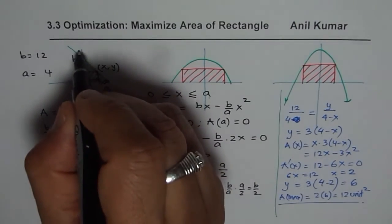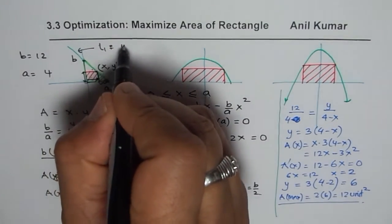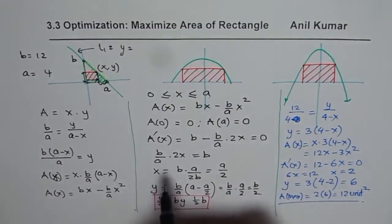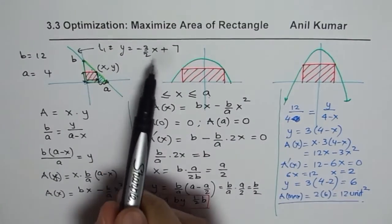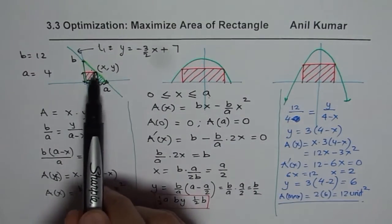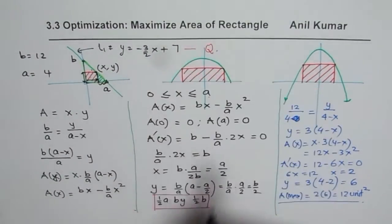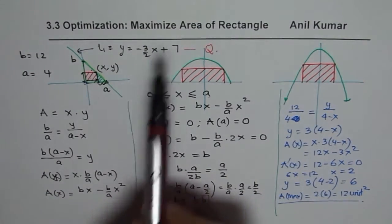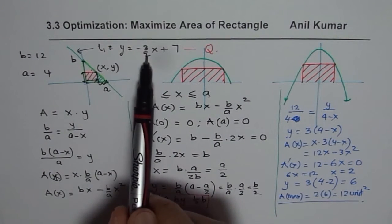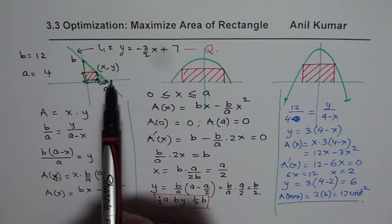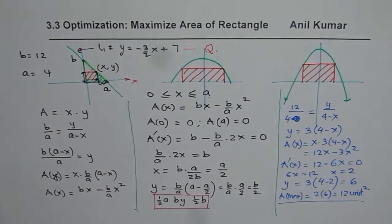At times you may be given an equation of a line directly. For example, consider y = −(3/2)x + 7. If that is the equation of a line, you need to find the rectangle of maximum area inscribed within that line and the coordinate axes. That is the question for you to practice.